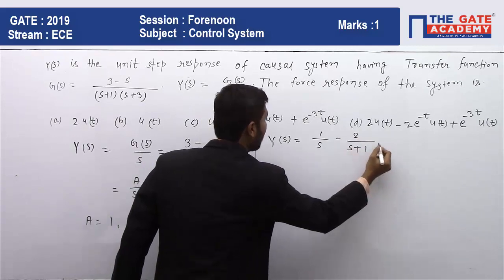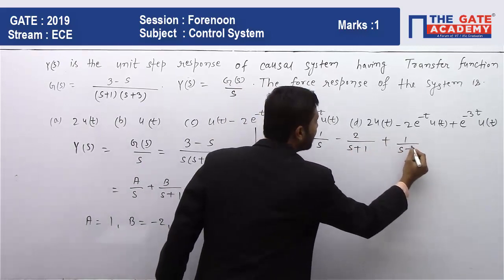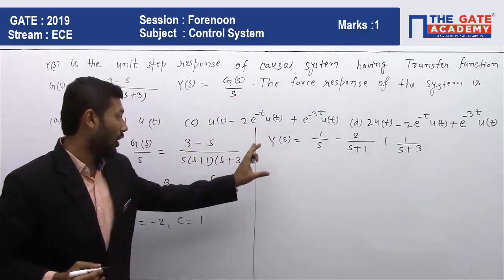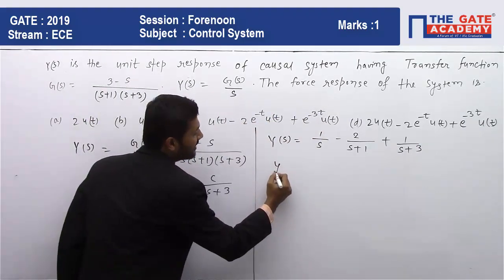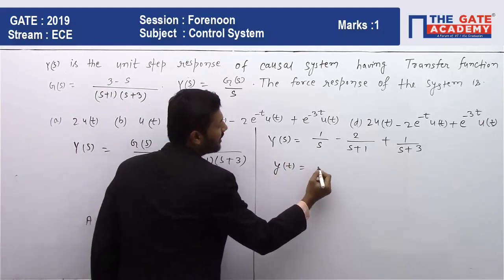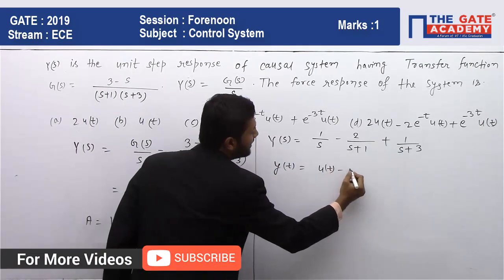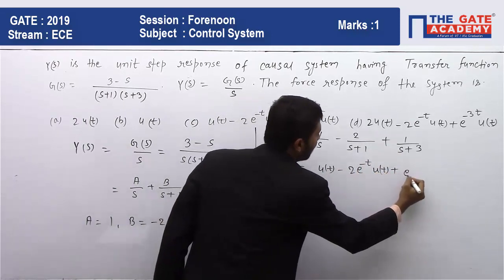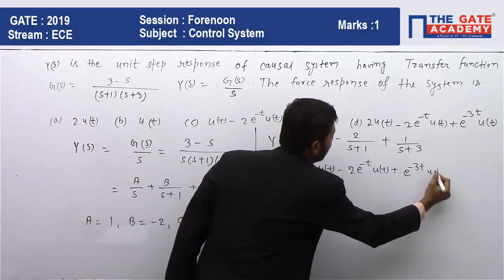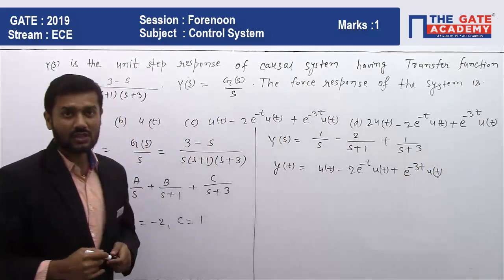We have got this response. Now we will have to find the time domain signal. This time domain signal y(t) is nothing but u(t) - 2e^(-t)u(t) + e^(-3t)u(t). But in the question it is given that the forced response of the system is...